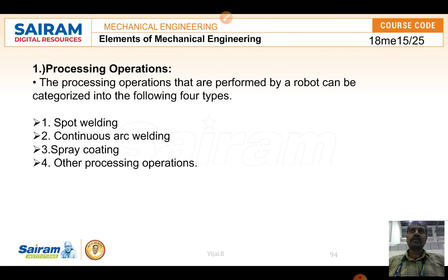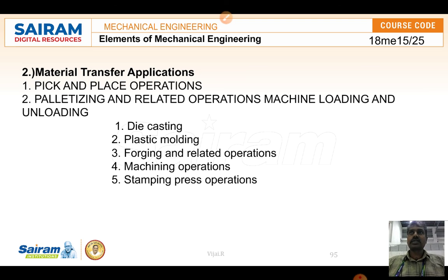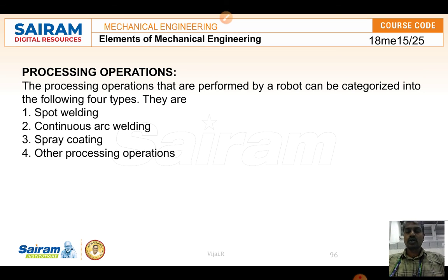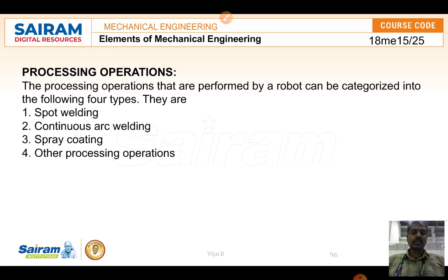Vehicle painting after assembly is also a process where robots are used. Material transfer takes place between operations such as assembly, forging, and plastic molding — automatic conveyance systems handle this. These are the applications of robots in industrial areas. In the next video we will see what are the types of robots under different physical configurations.